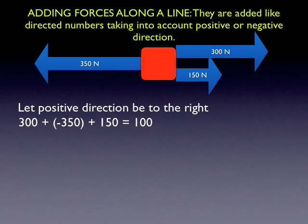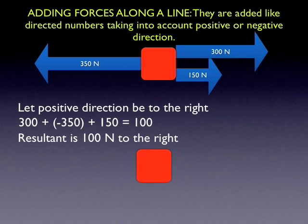So here's the addition. 300 plus minus 350, because 350 newton goes to the left, plus 150, and the result is 100. So the resultant force is 100 newtons to the right. Let's have a look. There it is. 100 newtons is the force which has the same effect as those three.